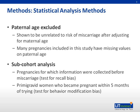In this study, paternal age was excluded, as studies have shown it is unrelated to the risk of miscarriage after adjusting for maternal age, and many pregnancies also had missing values on paternal age. A separate sub-cohort analysis was done for two categories: first, pregnancies for which information were collected before miscarriage, to test for recall bias; and second, primigravid women who became pregnant within five months of trying, to test for behavior modification bias.